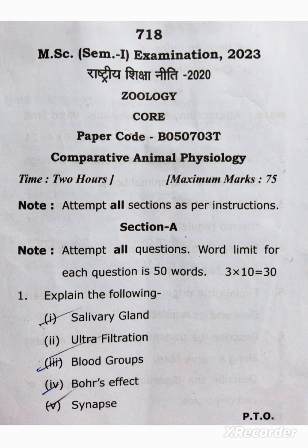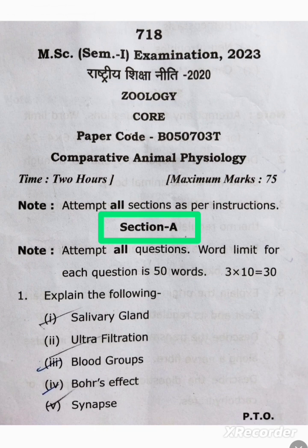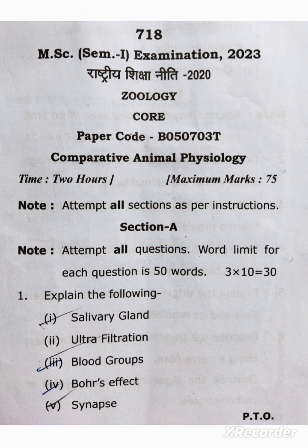In this video we are going to understand the MSc question paper and also discuss what importance these questions may have next time. Starting from Section A: the instruction is to attempt all questions, word limit for each question is 50 words. Total number of questions is 10 and they are 3 marks each.